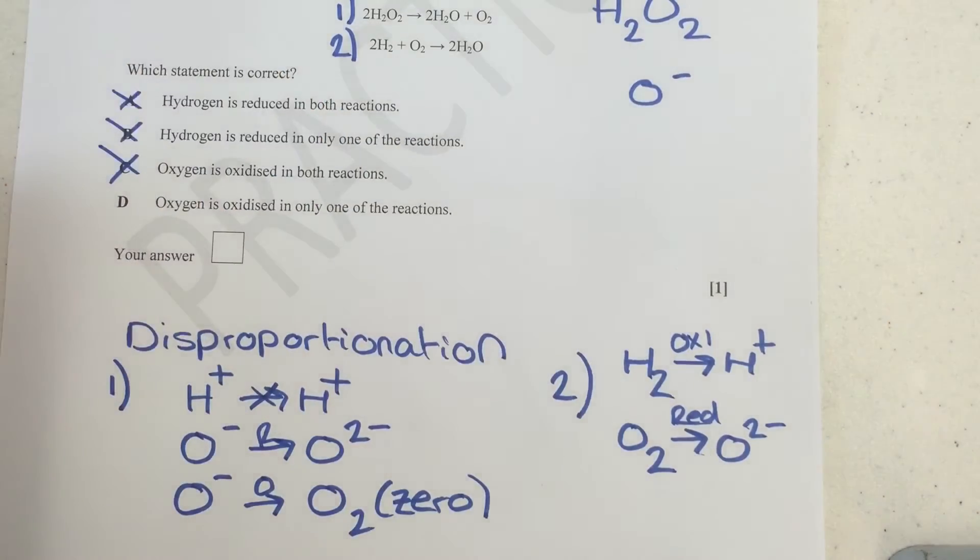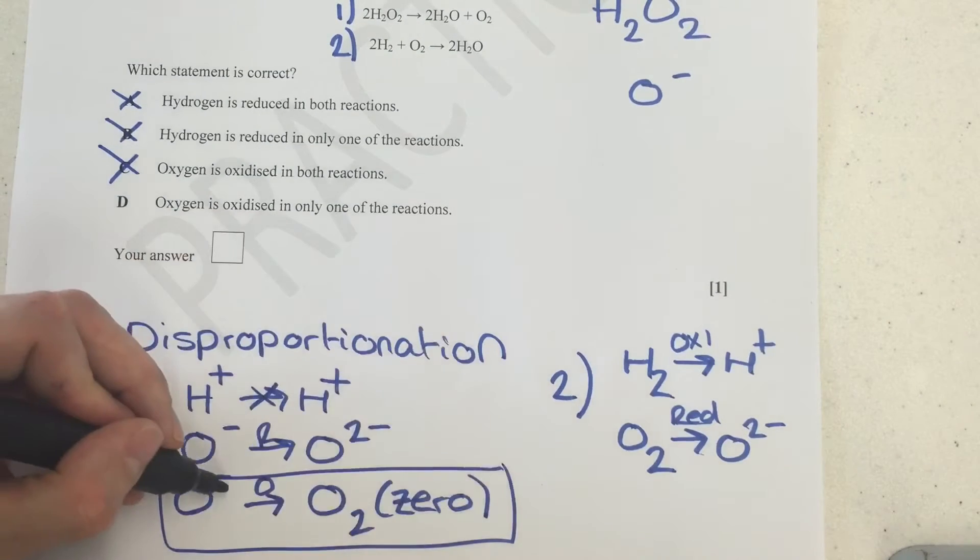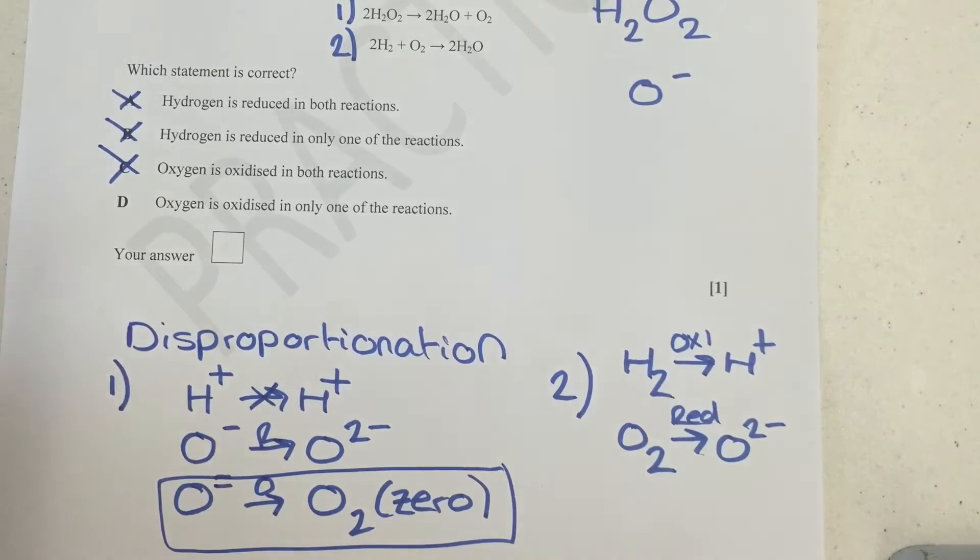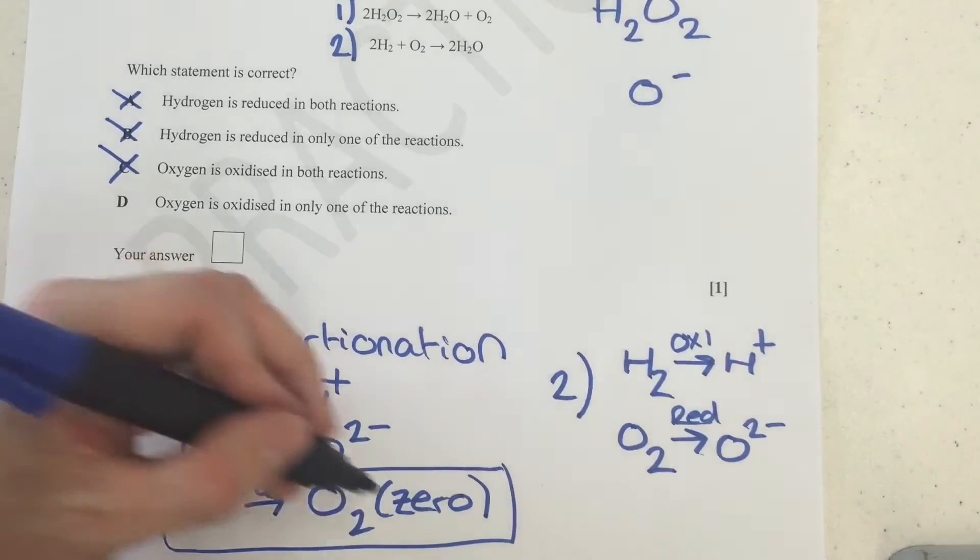Here the question is, oxygen is oxidized in both? Here it's reduced, even though it does get oxidized on this side. So here, oxygen is oxidized in only one of these reactions, it's got to be here, we've got our oxidation just there, going from O- over to the O2, which is zero.